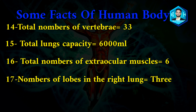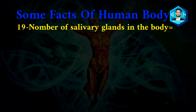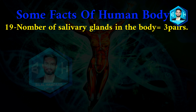Number seventeen: number of lobes in the right lung is 3 — there are 3 lobes in the right lung. Number eighteen: number of lobes in the left lung is 2. Number nineteen: number of salivary glands in the body is 3 pairs.